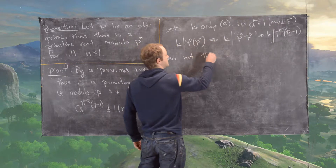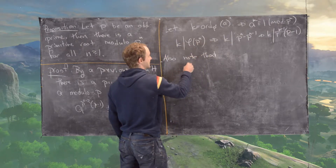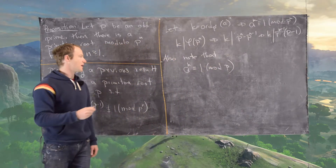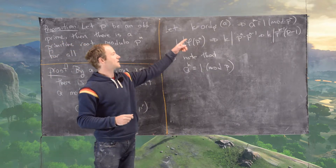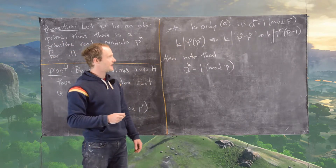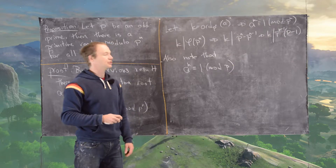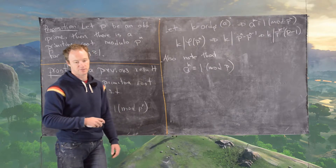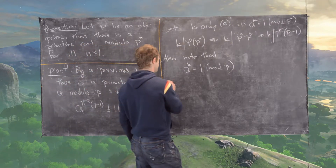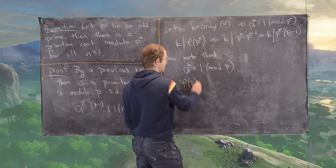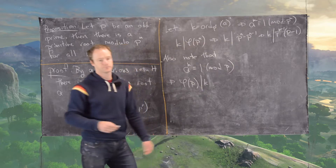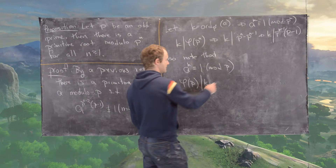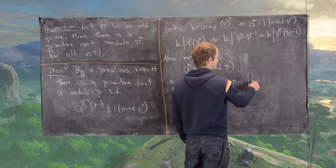Also note that a to the k is congruent to 1 modulo p. We know this because if it's congruent to 1 modulo p^n, it equals 1 plus a multiple of p^n, and that multiple of p^n is also a multiple of p. So phi of p must divide k, which means p minus 1 divides k.